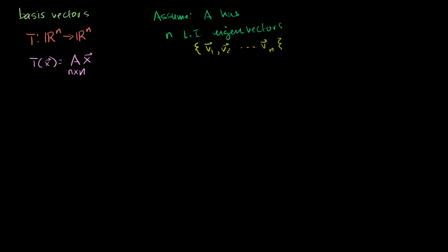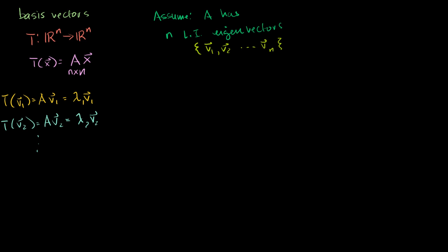The transformation of each of these vectors — I'll write it over here. The transformation of vector 1 is equal to A times vector 1, and since vector 1 is an eigenvector of A, that's going to be equal to some eigenvalue lambda 1 times vector 1. The transformation of vector 2 is equal to A times V2, which equals some eigenvalue lambda 2 times V2. And the transformation of Vn is equal to A times Vn, which is lambda n times Vn.